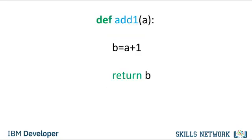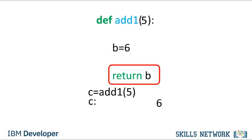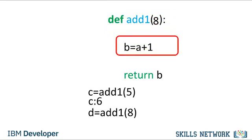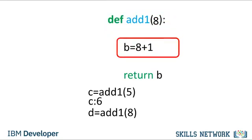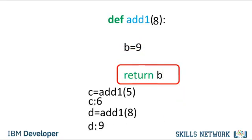Let's go over an example of when you call a function — note this is a simplified model of Python. We call the function, giving it an input of 5. The value of 5 is passed to the function. The sequences of commands are run: the value of a is 5, b is assigned a value of 6, and we return the value of b — in this case 6. If we call the function again, the process starts from scratch. We pass in 8, the subsequent operations are performed, and the function returns 9.